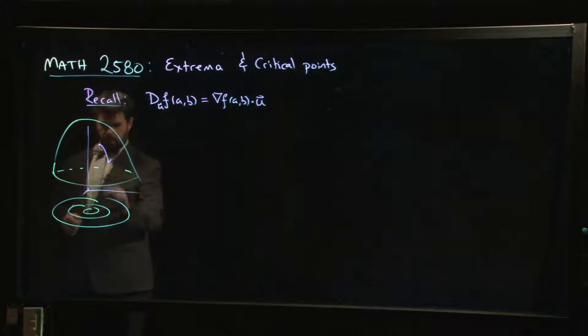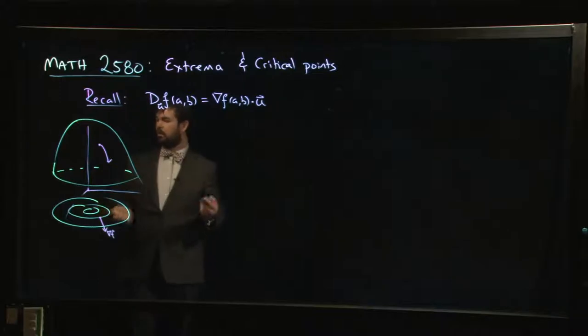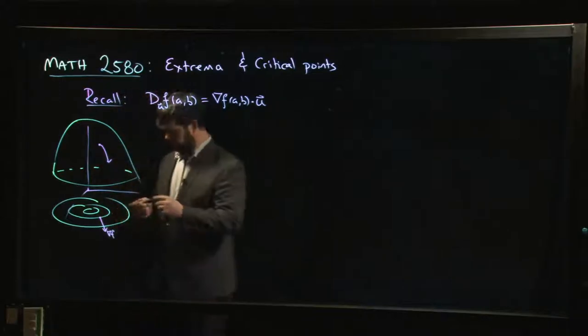This point on the surface corresponds to some point down here in the domain. You can use the gradient vector to calculate that steepest descent direction. The gradient is going to do this for you.